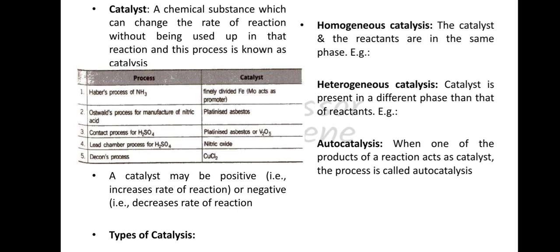In the manufacture of nitric acid through the Ostwald process, we use platinized asbestos as the catalyst. In the Contact process for SO3, we use platinized asbestos or V2O5.